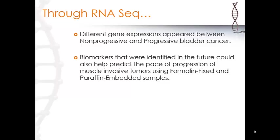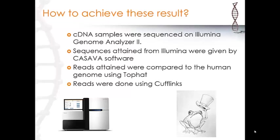By using RNA-Seq to focus on formalin-fixed and paraffin-embedded bladder cancer samples, researchers were able to differentiate between the two gene signatures of the non-progressive and progressive bladder cancers. The discovery through RNA-Seq will help future clinicians and researchers in designing ways for making accurate predictions of bladder cancer, and can be applied to other areas of cancer research.